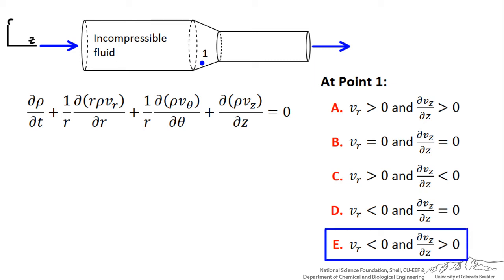You have chosen answer E, that the radial velocity is negative and the axial velocity increases with positive distance down the tube.